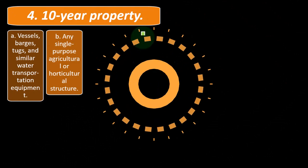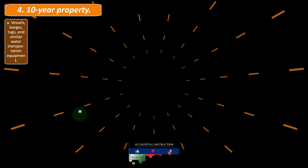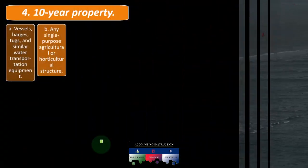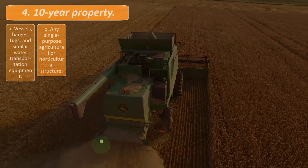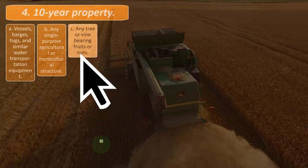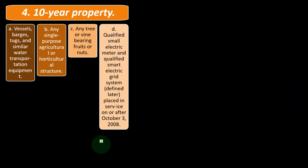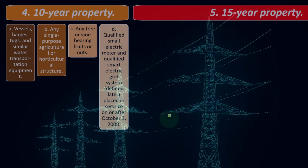Ten-year property also includes any single-purpose agricultural or horticultural structure, any tree or vine bearing fruits or nuts, and qualified small electric meter and qualified smart electric grid systems placed in service on or after October 3, 2008. These are somewhat more specialized categories.